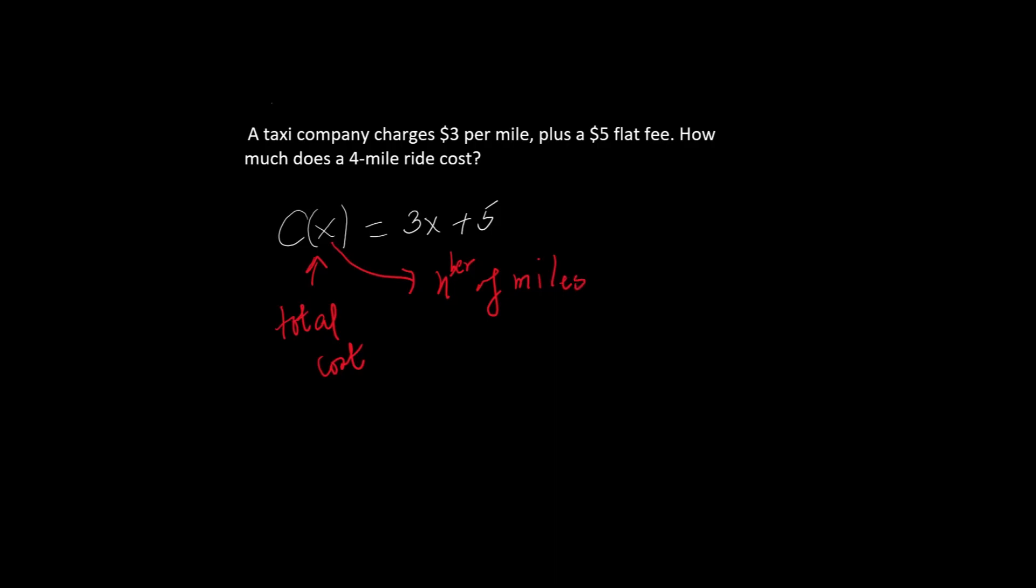Let's start with a 4-mile ride. We want to evaluate c(4). That means we plug 4 in place of x. So c(4) = 3(4) + 5. 3 times 4 is 12. 12 + 5 is 17. So a 4-mile ride costs $17.